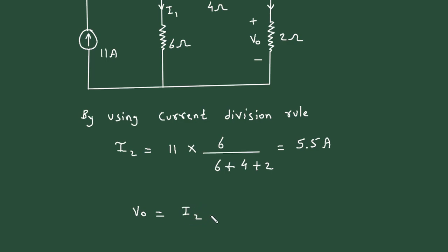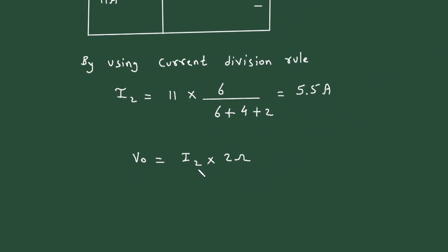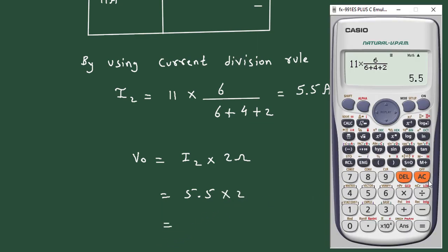Here, I is I2 and resistance value is 2 ohm. We have calculated the value of I2. I2 is 5.5 multiplied by 2, which equals 11.